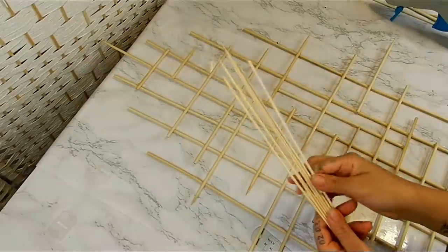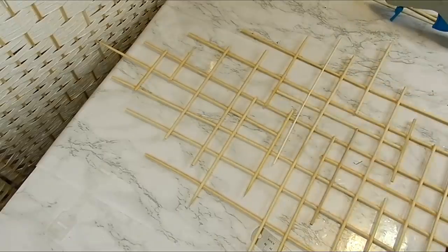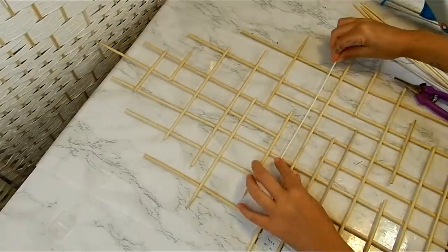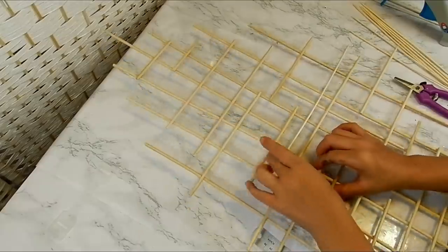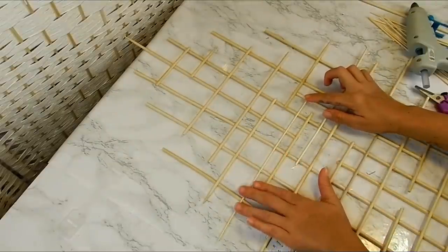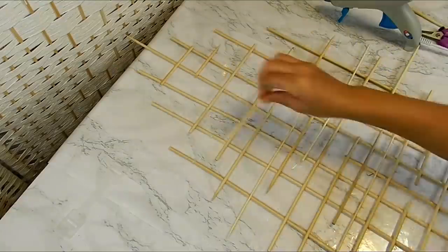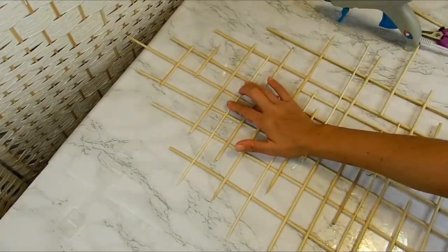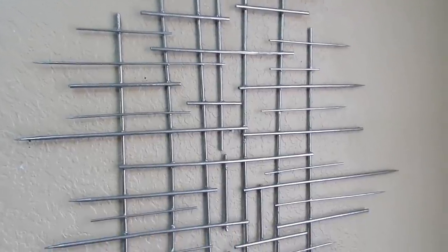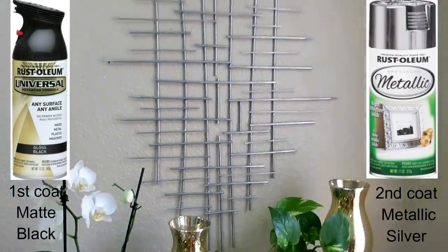I'm also going to be adding some of these thinner skewers. So here's the wall piece hanging on the wall without any mirrors, and all I did was give it one coat of black spray paint and a coat of silver metallic spray paint.